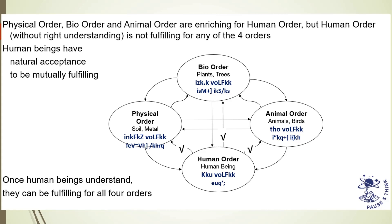We all know that there is an interconnectedness and mutual fulfillment among all four orders. They are all interconnected. For example, the physical order is connected with the bio order, the animal order, and the human order. The bio order is connected with the physical, animal, and human orders. Similarly, the human order is connected with all. There is interconnectedness and mutual fulfillment with all the orders.